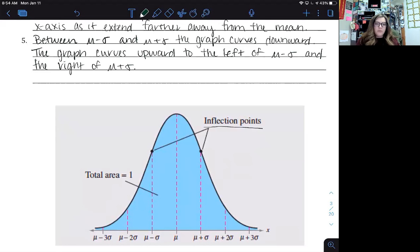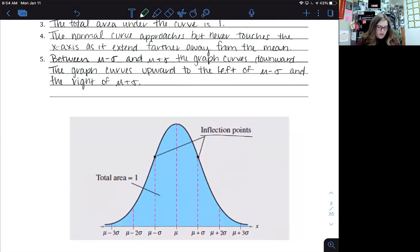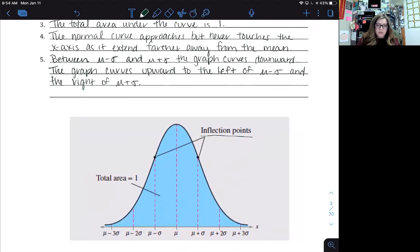All right, so this is a picture of the normal distribution. Notice the mean's in the center, it's bell shaped, and then the total area under the curve is one.